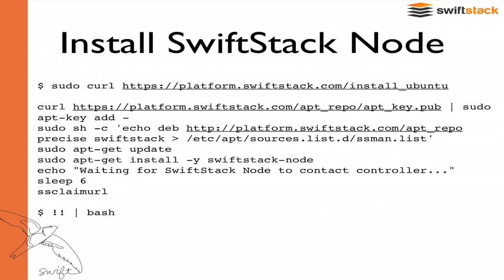If you're running CentOS or Red Hat, replace 'ubuntu' in the URL with that operating system. We support Red Hat, CentOS, and Ubuntu — we don't support SUSE. Don't forget the sudo if you trust it and pipe that whole thing to bash. Most of the first commands are about adding a key to the package archive — to the PPA. Then we do an apt-get install. After that, we're registering this node or environment with the platform, with the controller.